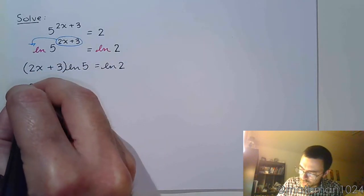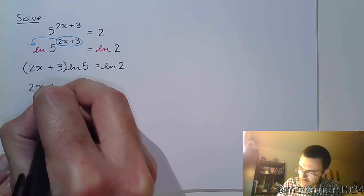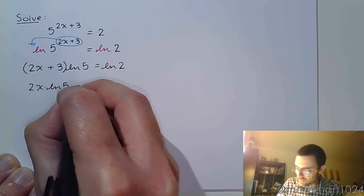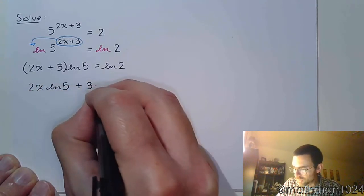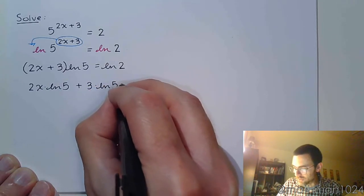So when we distribute, we get 2x times the natural log of 5 plus 3 times the natural log of 5.